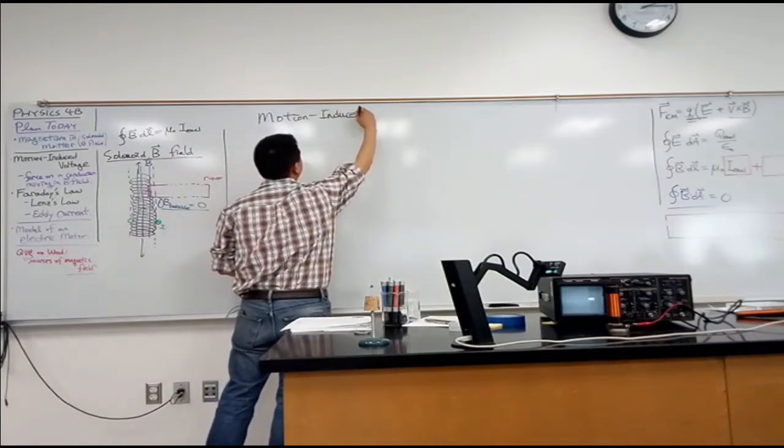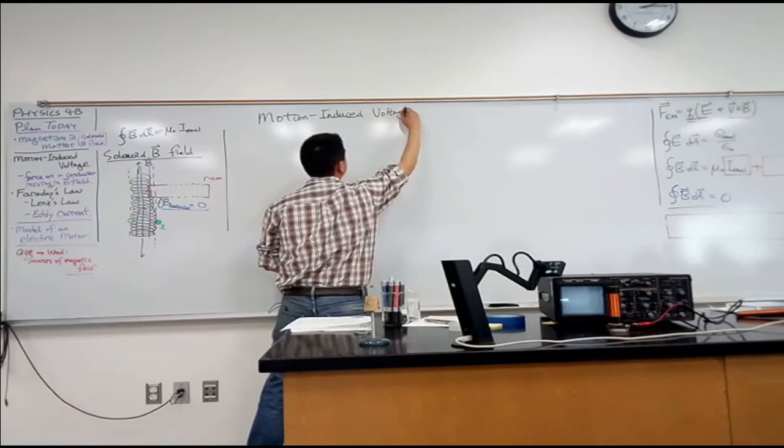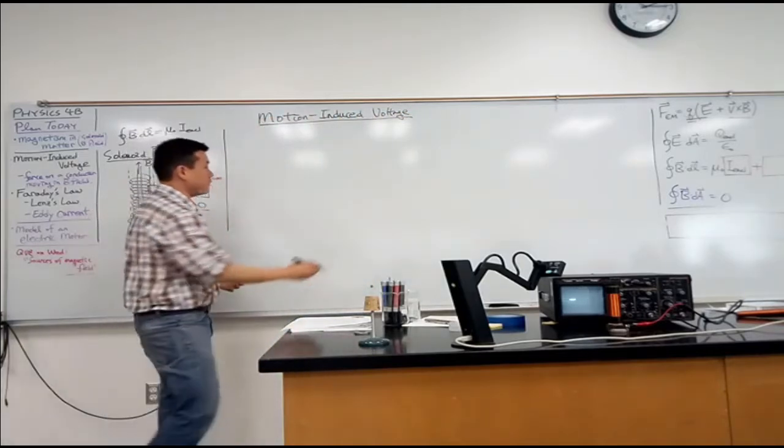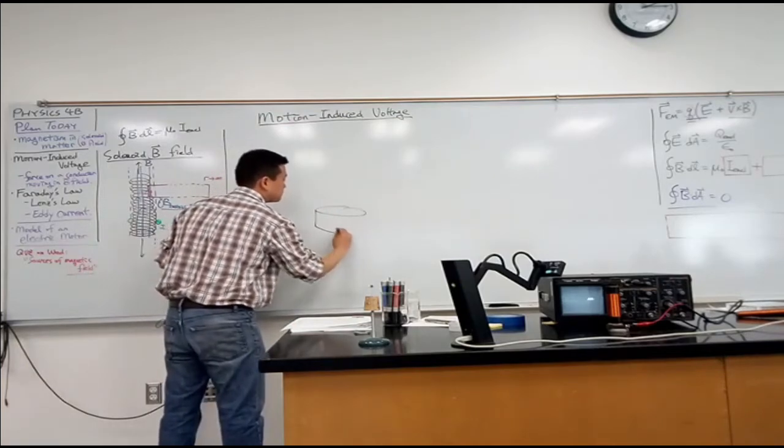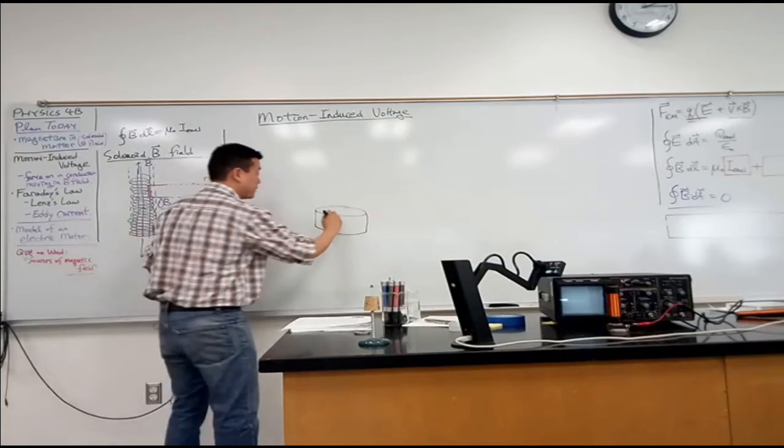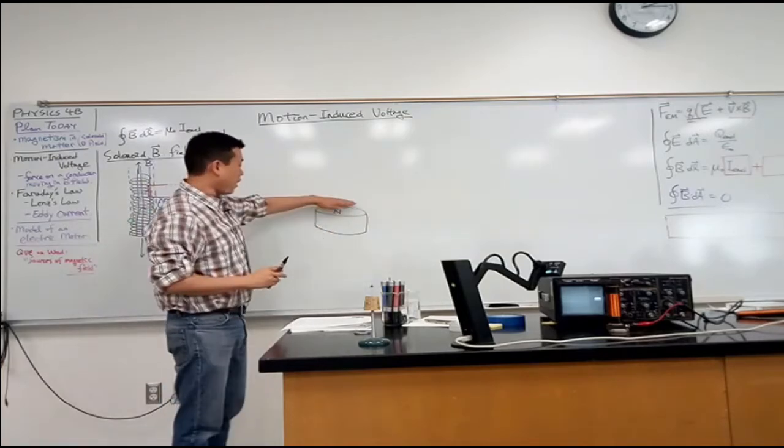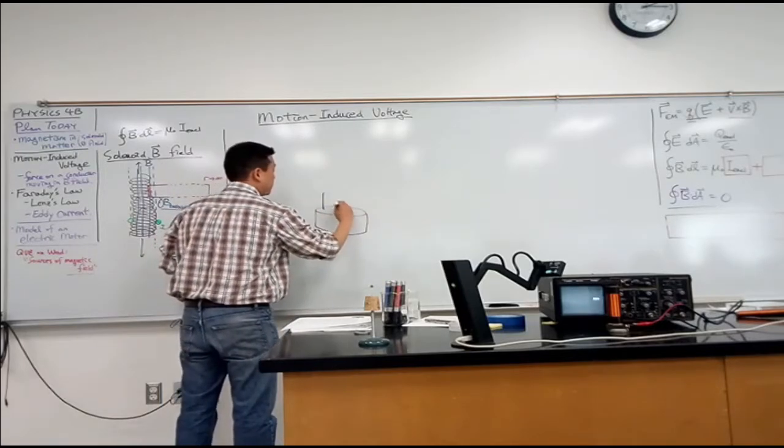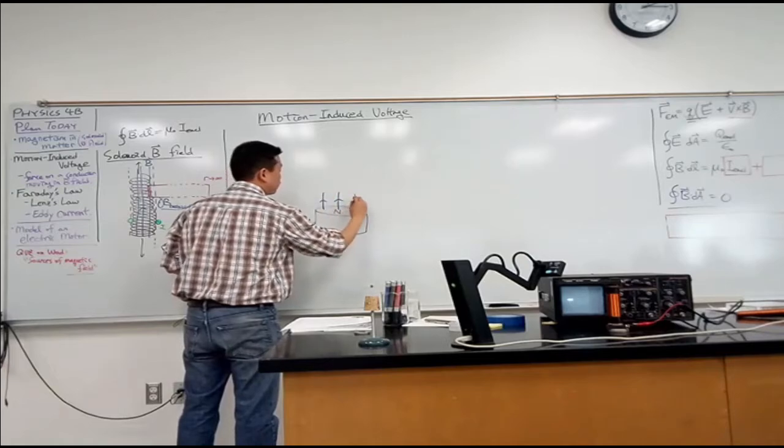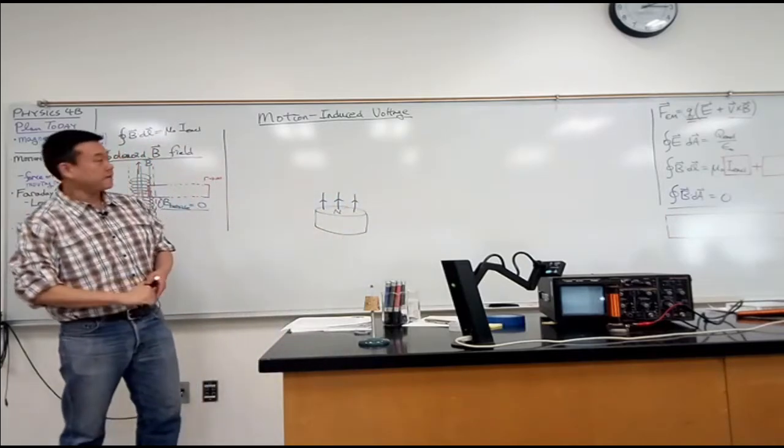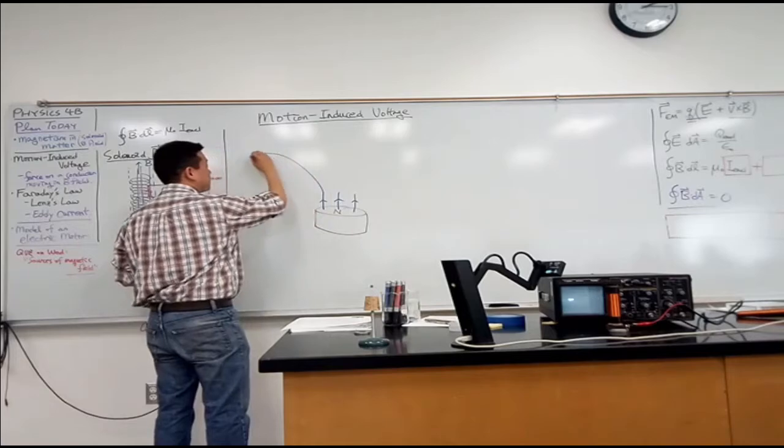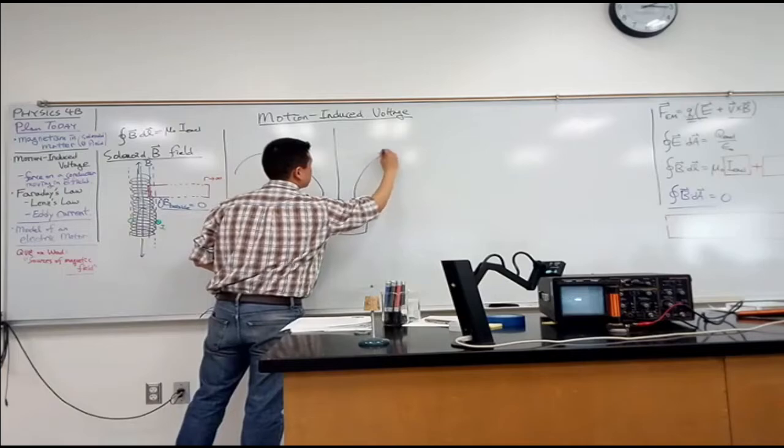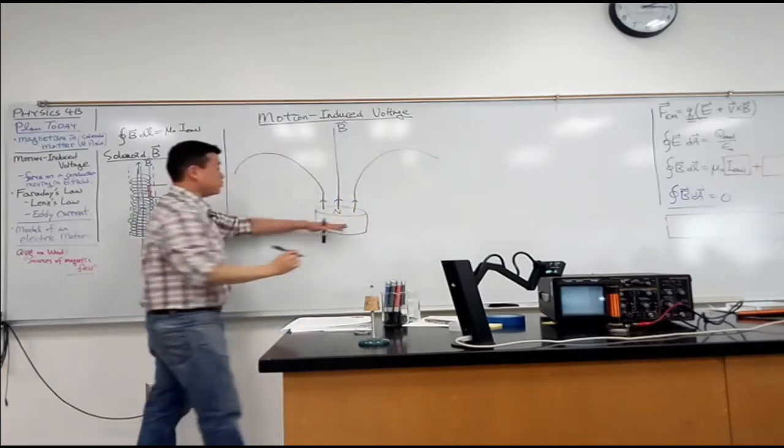Motion-induced voltage. In this particular setup, what you have is you have a very strong magnet which is generating magnetic field. Let's just say the upper end is the north end. Then there's a pretty strong magnetic field coming out of here. And if I'm drawing the field correctly, then it should look like a dipole field. This is the magnetic field from this strong magnet.